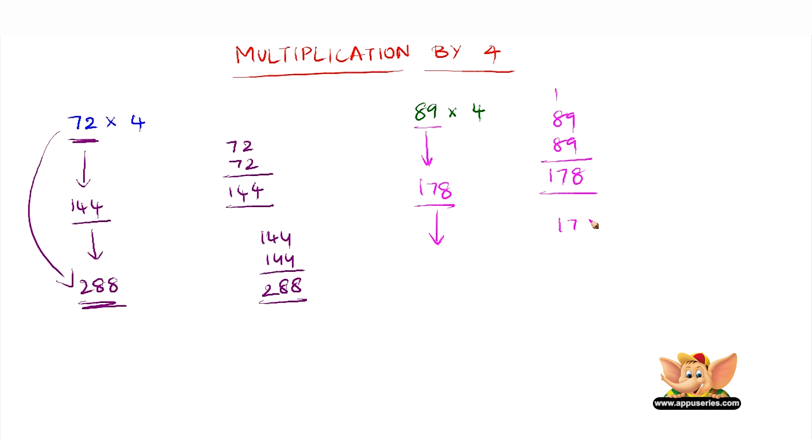Doubling 178 gives us 356. So therefore 356 is the answer of 89 multiplied by 4.